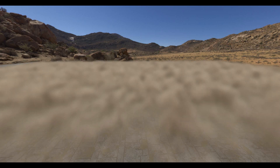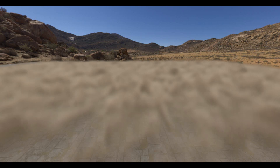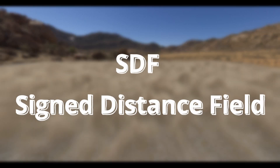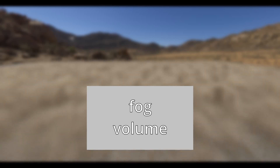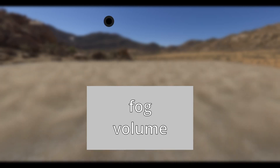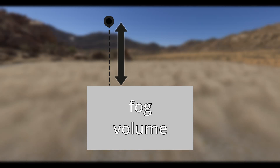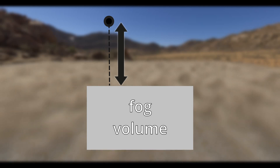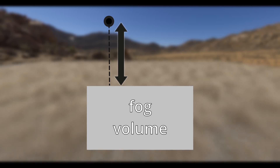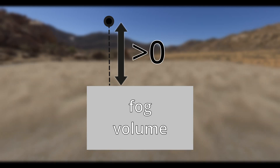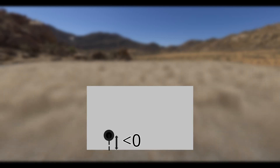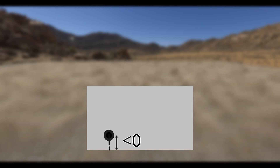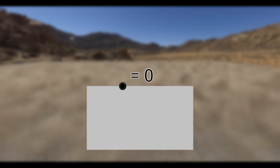We also have some inputs to do calculations on and set our outputs. The first input is SDF, or signed distance field. Imagine this is our fog volume in space — if you choose a point outside the volume, SDF gives you the distance to the closest point on the surface. All points outside the volume have a positive SDF value, all points inside have a negative SDF value, and points on the surface have an SDF value of zero.